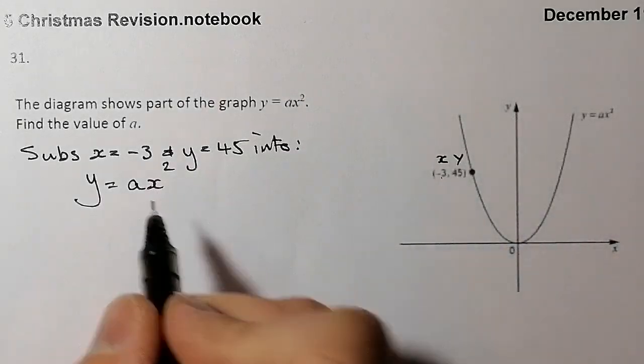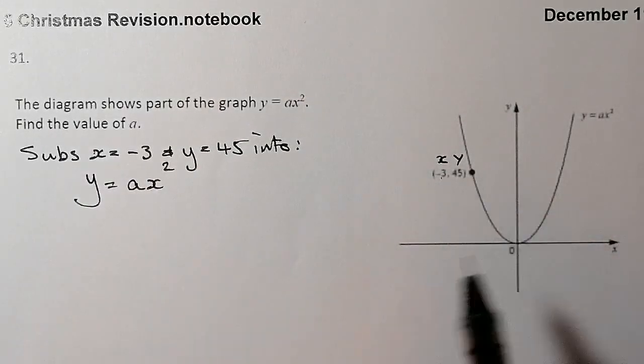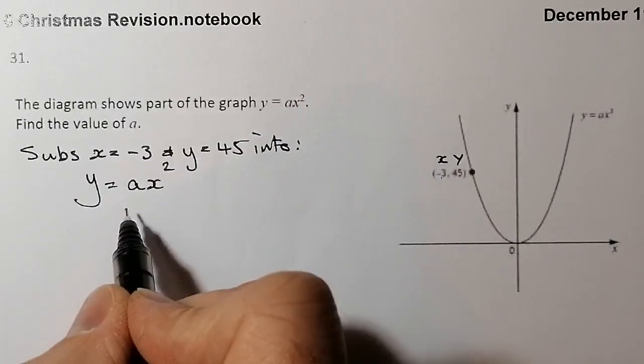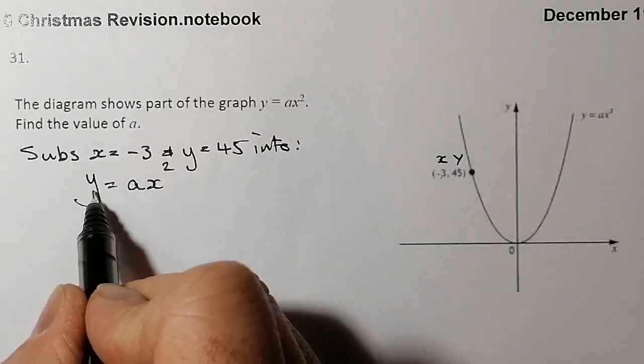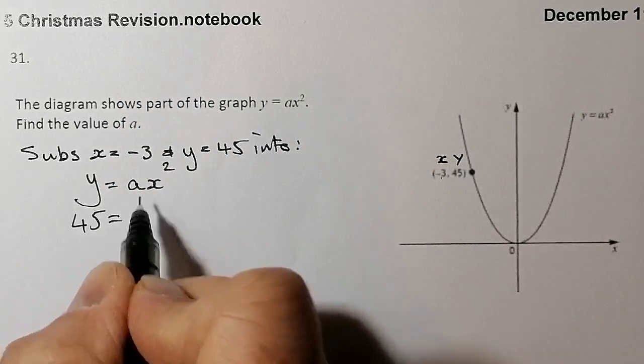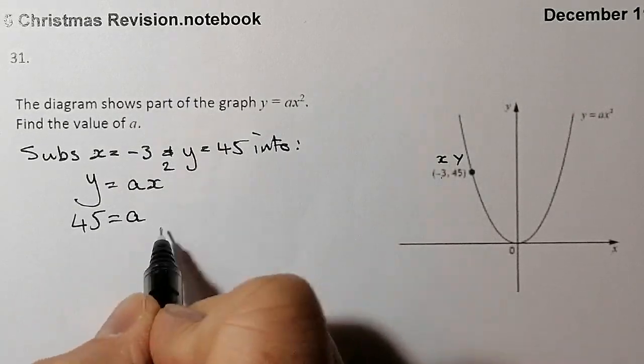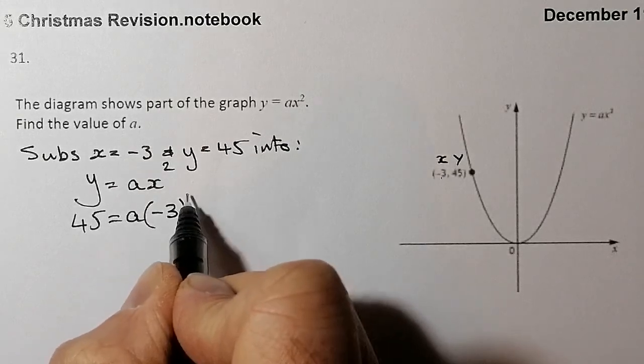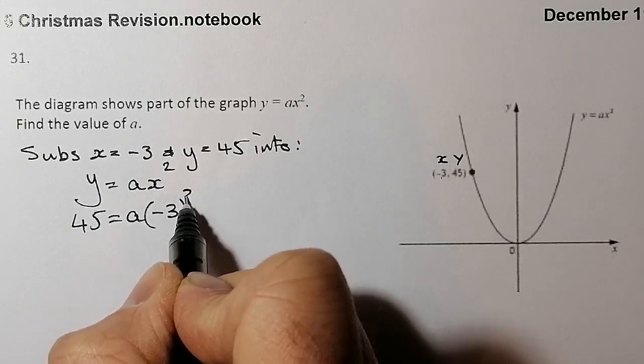So when I do this I've just got to be a bit careful with the x value. It's a negative value, so what I'm going to do is I'm going to put in the values and work out a. So for y, I know it's 45. For a, well, don't know that yet, that's what I'm working out. For x, I'm going to put in there negative 3 in a bracket, and I'm going to square that.